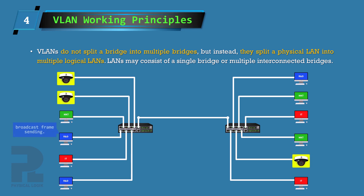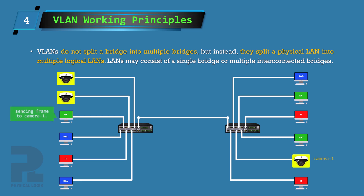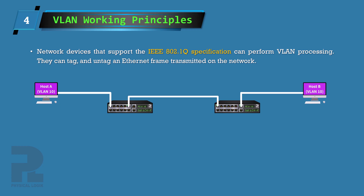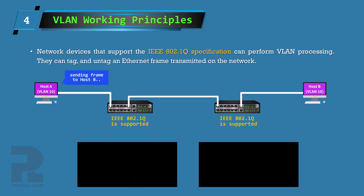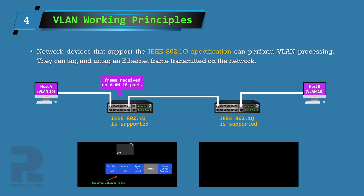When a broadcast or unknown unicast frame is sent by a host on the blue VLAN, the switch will flood this frame to users on the blue VLAN only. For unicast communications, only devices within the same VLAN on the switch can communicate with each other. This technology is widely used in modern-day campus networks to isolate hosts. In practical applications, a switch that implements the VLAN technology must support the IEEE 802.1Q specifications, and when configured will attach hosts to VLANs based on predefined rules. The switch should also have the capability to perform VLAN tagging and untagging, which means it can modify the original Ethernet frame it receives by adding a VLAN header.